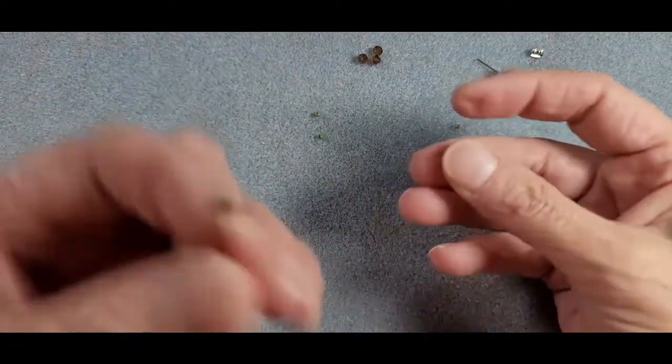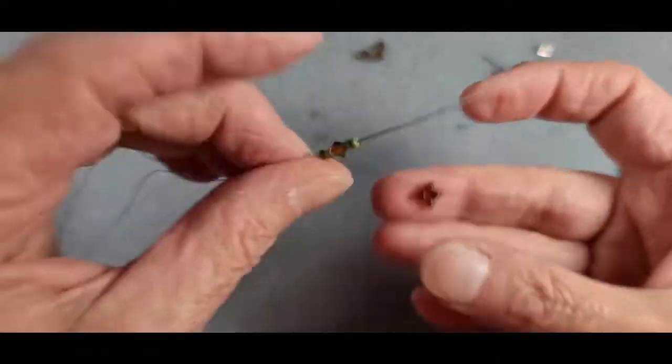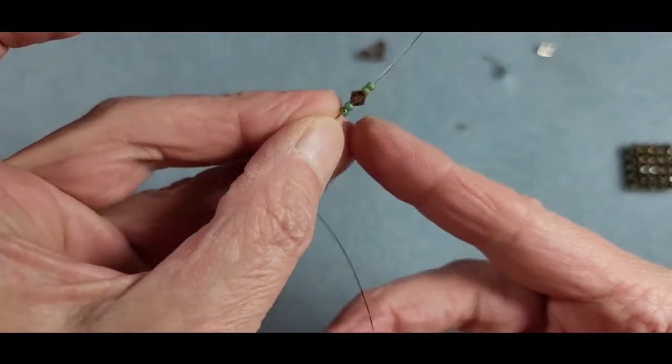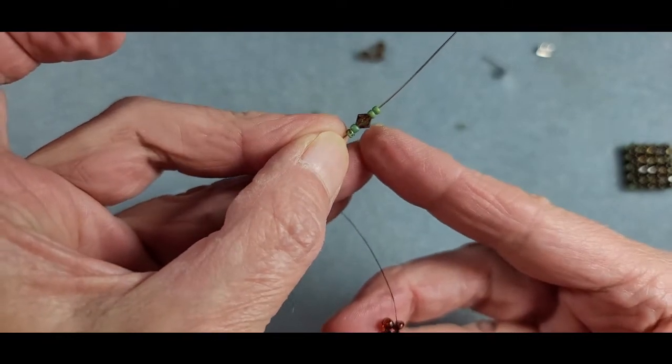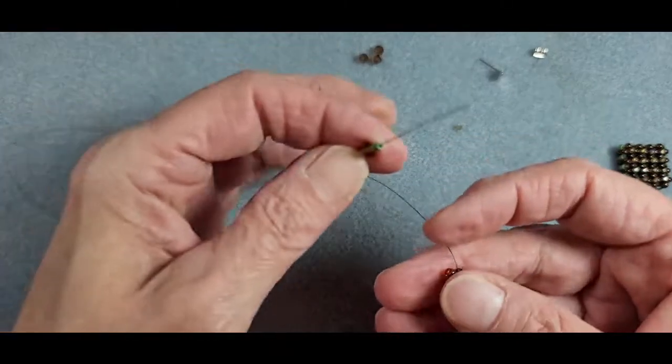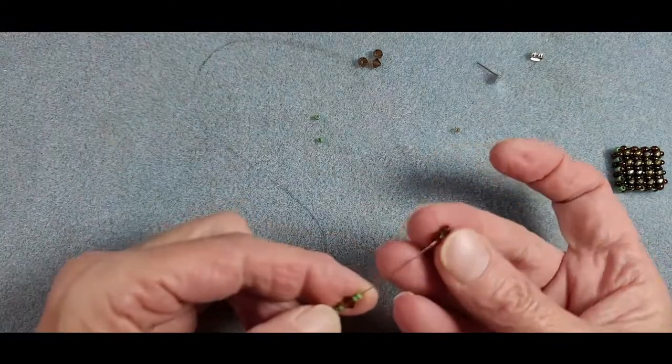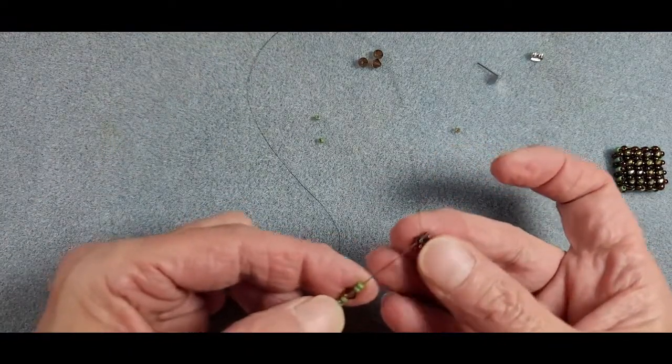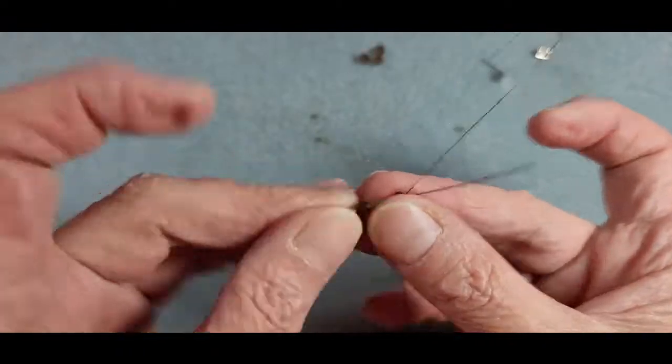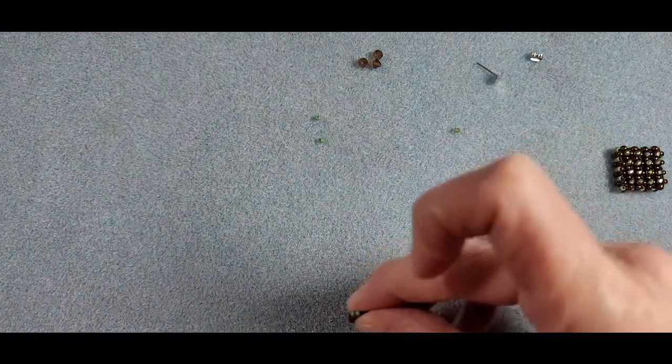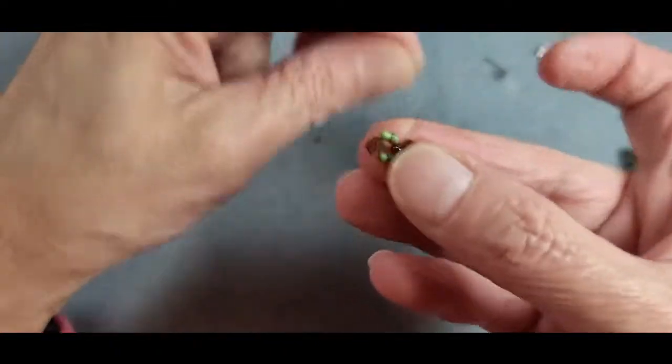So now we're ready to form the first wall of our cube. To do that we need to pick up two 11-0s, a bicone and two 11-0s. We're going to pass back through the same bead we're exiting from the opposite side just like that.